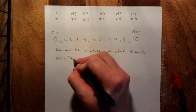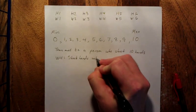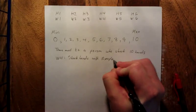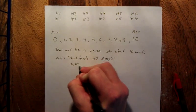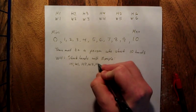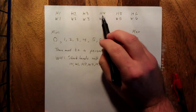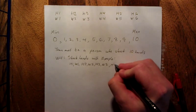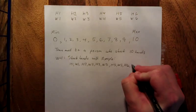So we'll say shook hands with ten people, and those ten people would be: husband one, wife one, husband two, wife two, husband three, wife three. Now wife four cannot shake hands with husband four or with wife four, so we'll skip those two. Husband five, wife five, husband six, wife six.